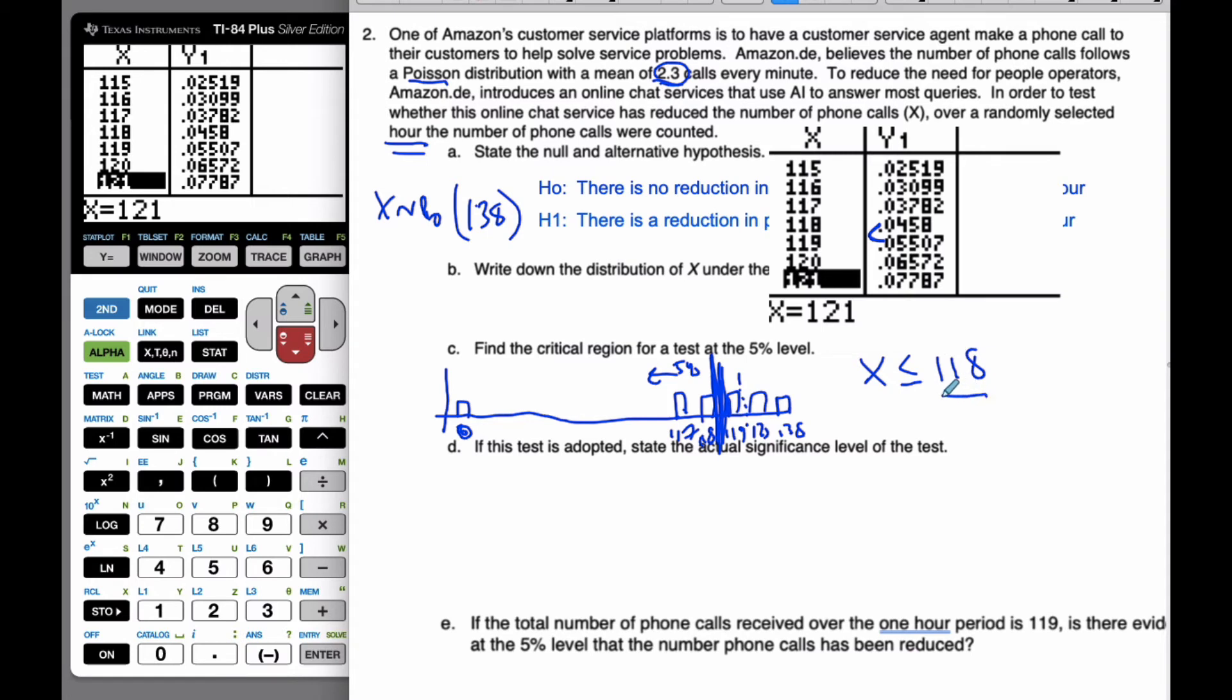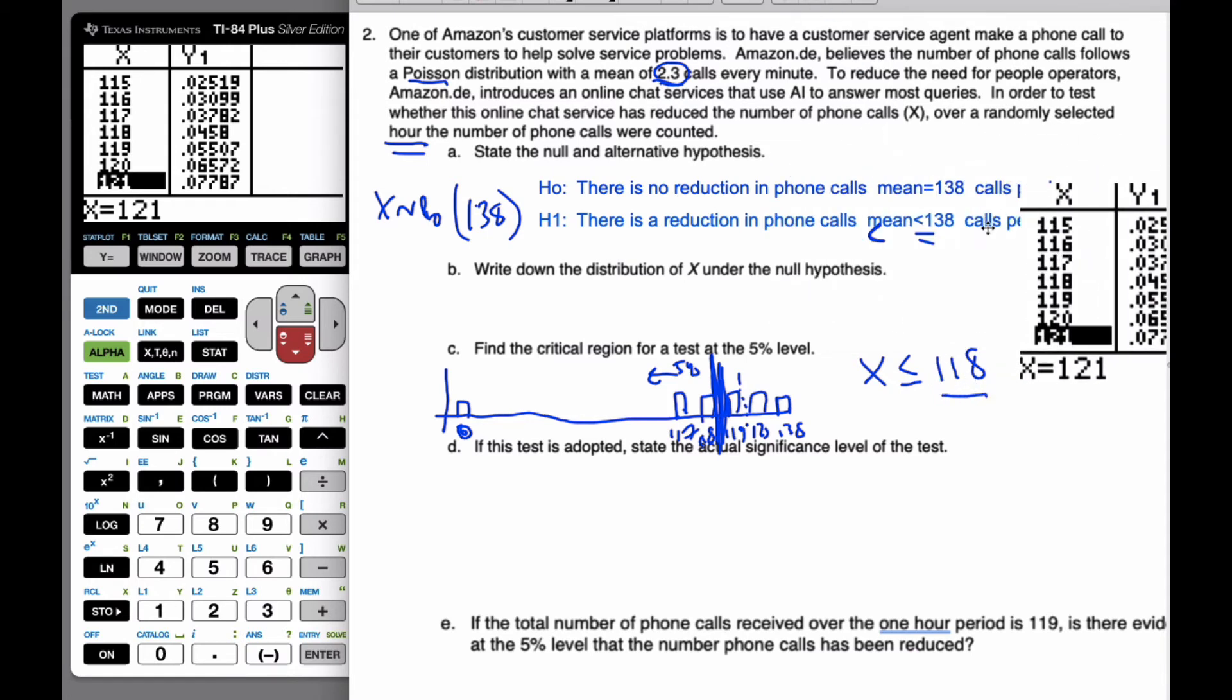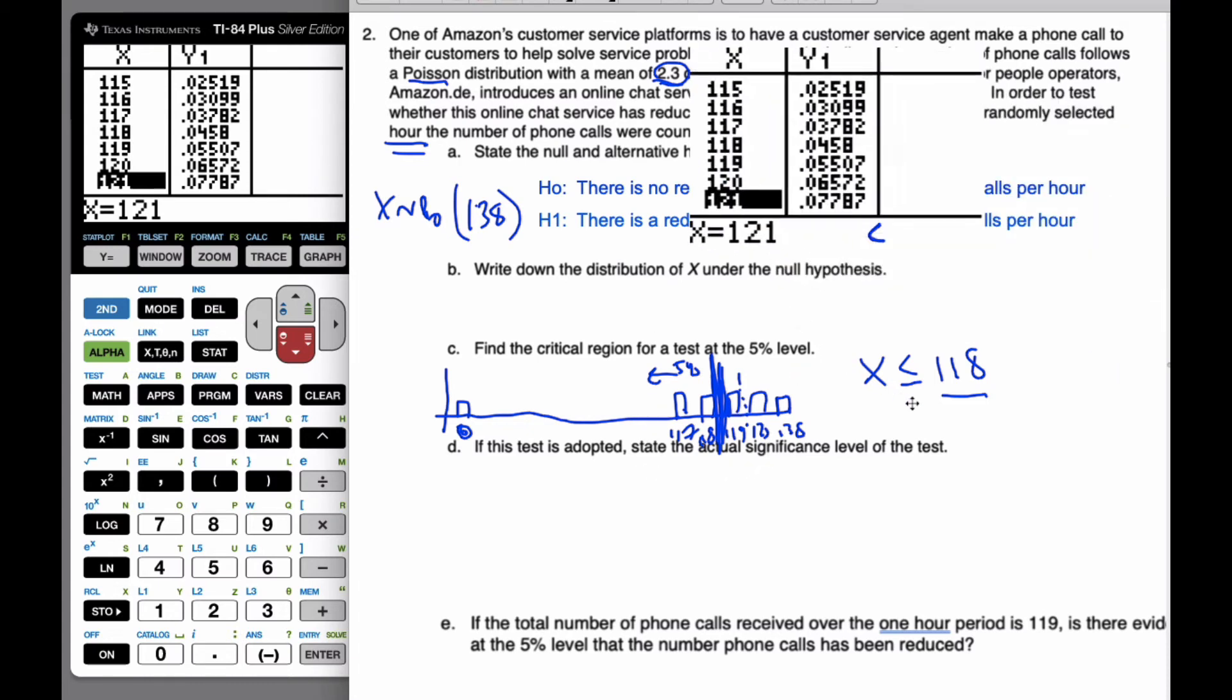So if I get 118 phone calls, then I will reject the null hypothesis and say there's been a reduction in phone calls. If this test is adopted, to state the actual level of significance, I want the value of X less than or equal to 118. So to find this, I'm going to find a probability that X is less than or equal to 118, which I can see from my table is 0.0458. This is the level of actual significance for this particular test.